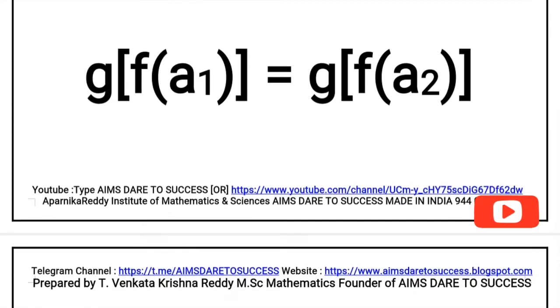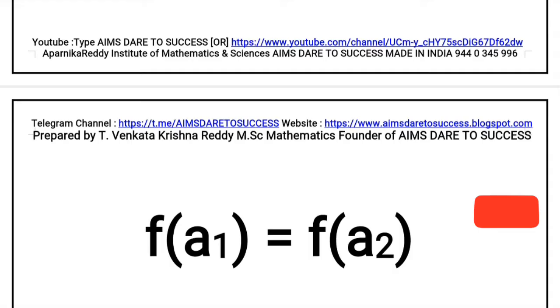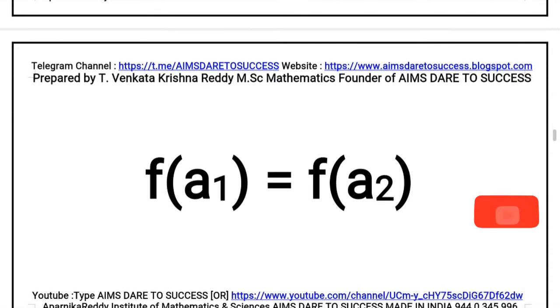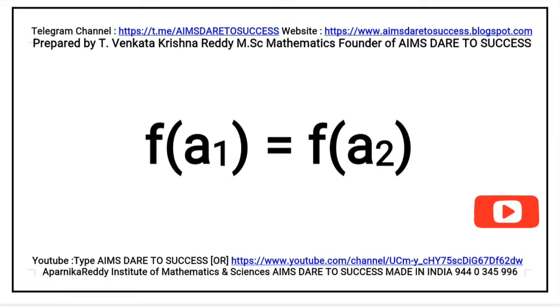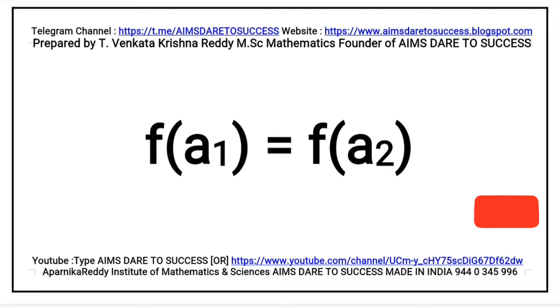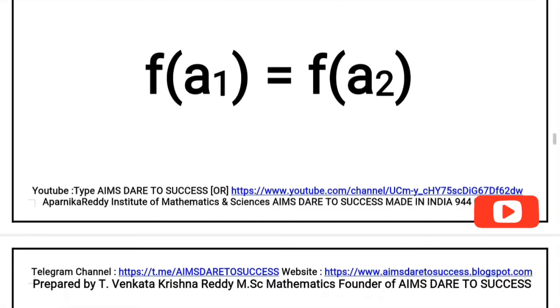We get F(a1) equals F(a2). Since F is also a one-one function, F cancels from both sides, giving us a1 equals a2.